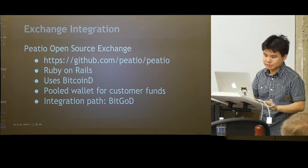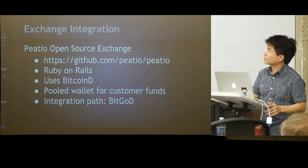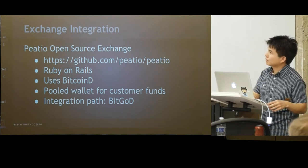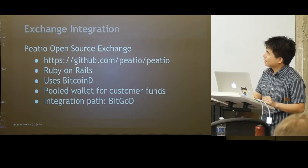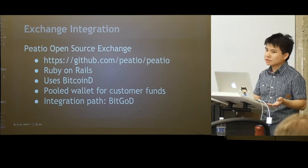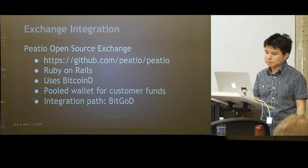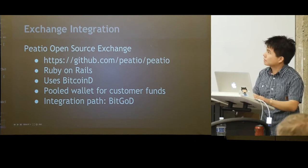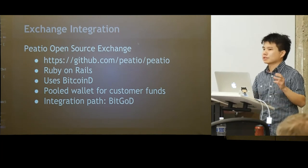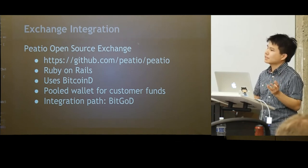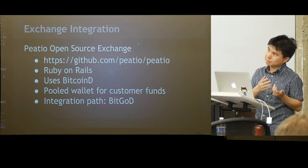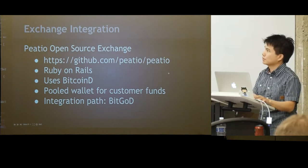As a final example, here's an exchange integration. I found an open-source exchange called PDO that anyone can download and run. It runs on Ruby on Rails and uses BitcoinD for customer funds. Our integration path was BitGoD — essentially an RPC replacement for BitcoinD that implements calls like createTransaction, createAddress, and sendCoins. By simply changing the BitcoinD RPC port to the BitGoD RPC port, we got the PDO exchange running on our platform.